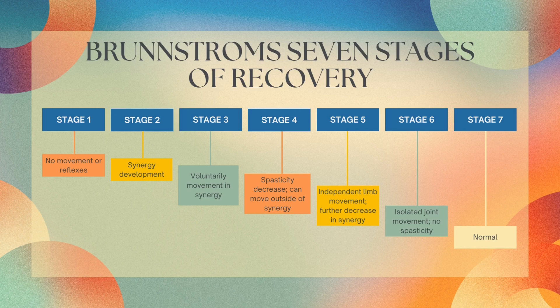Stage four is when spasticity decreases and they can start to move outside of that synergy. Stage five is when the limb moves independently and further decreases reliance on that synergy — those two stages can sometimes get confusing, so knowing those keywords is important. Stage six is isolated joint movement with no spasticity, and stage seven is when they have made a full recovery.